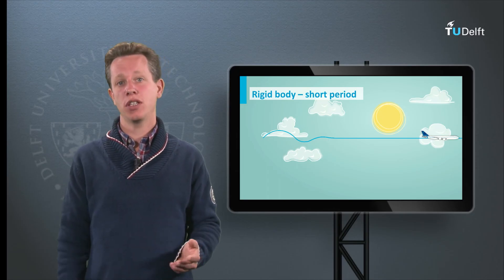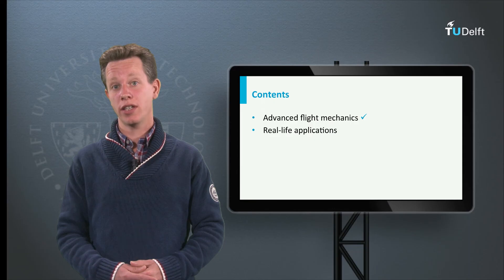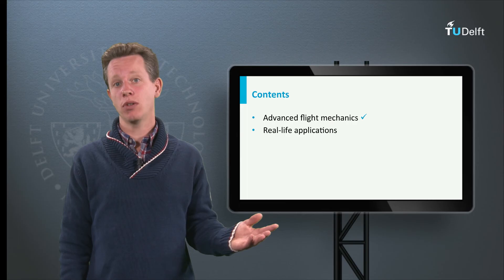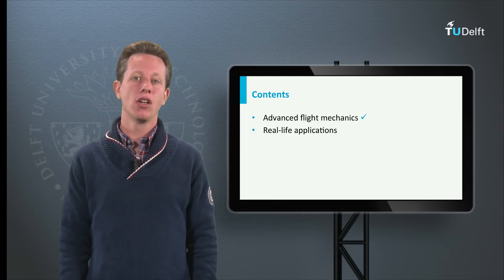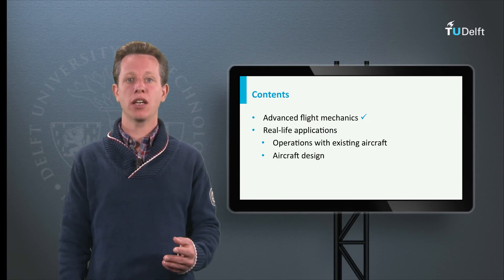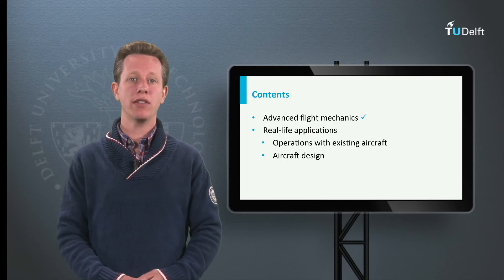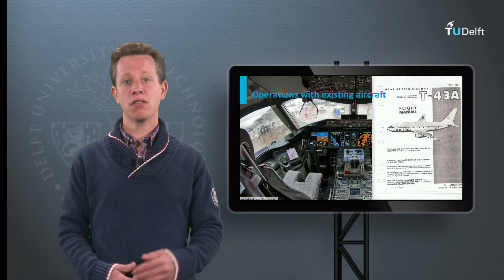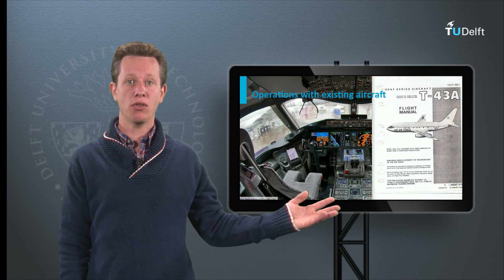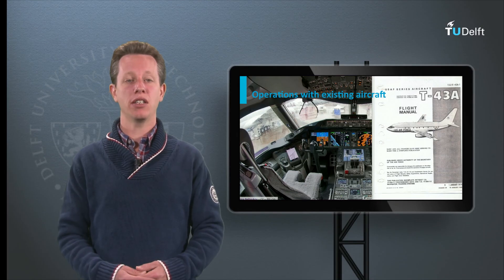I hope this gave you an impression of some more advanced topics. The calculations you are already able to do are already very relevant and widely used in real life, mainly for two applications. First of all, the optimal performance for existing aircraft must be calculated for all possible flight conditions. This knowledge can be written in the flight manual, such that the pilot can simply look up in a book how to get the best performance out of their airplane. This information can also be used in a flight management system by the autopilot.